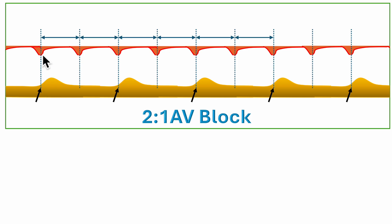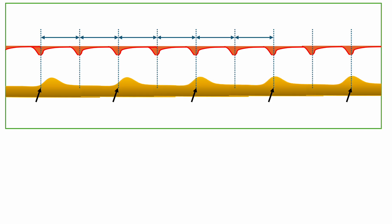The hallmark of 2:1 AV block, and how you differentiate it from complete heart block, is that the coupling interval between the atrial contraction and the ventricular contraction is exactly the same. Look at the atrial contraction falling at exactly the same place on each alternate beat relative to the ventricular complexes — the atrium is connected to the ventricle. In complete heart block, the atrial contraction falls at a different time relative to the ventricular contraction each beat, indicating that the atria and ventricles are not associated with each other.